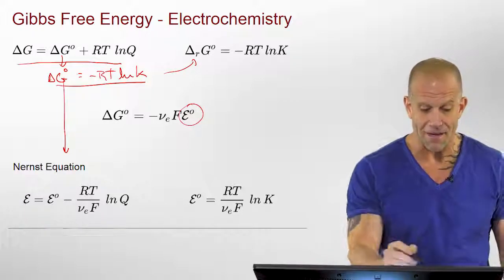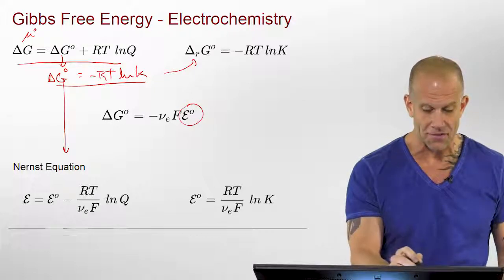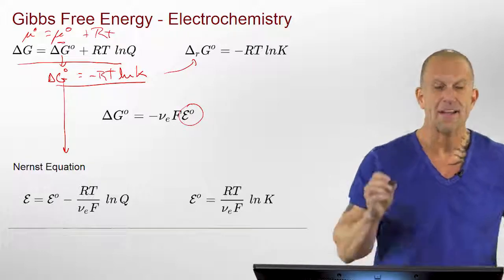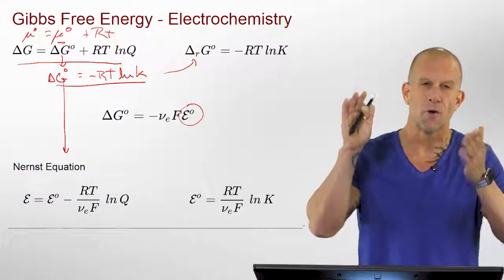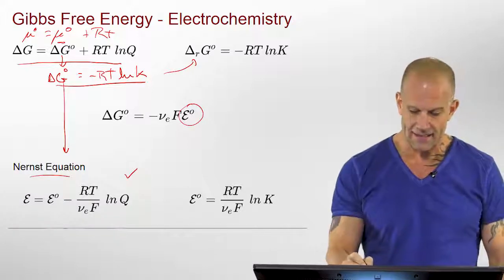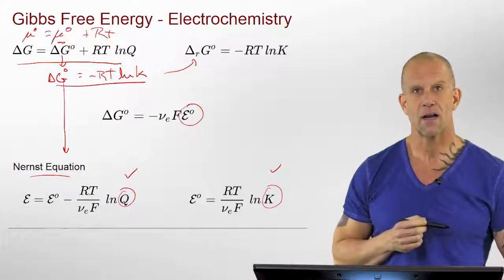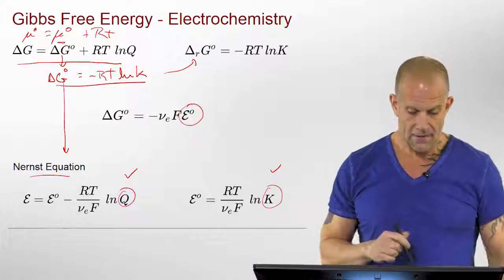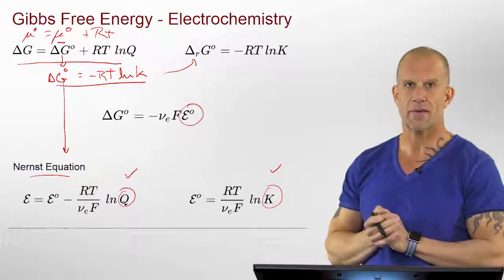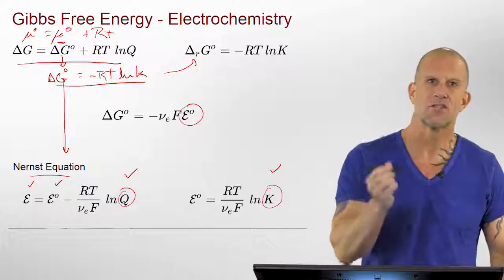The Nernst equation is, in a sense, the electrochemical equivalent with the same equilibrium constant and the same reaction quotient that we use when doing normal chemistry or biochemistry reactions — except this one is looking at things from its change in potential. So instead of looking at things in kilojoules per mole and keeping track of concentrations, we're looking at things in voltages — just how the electrons are changing.